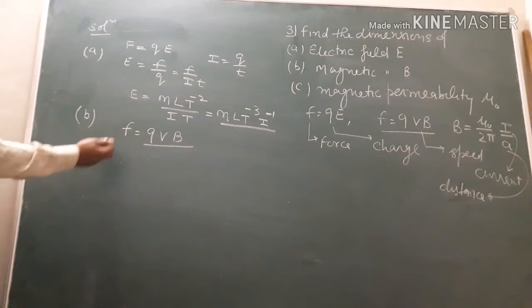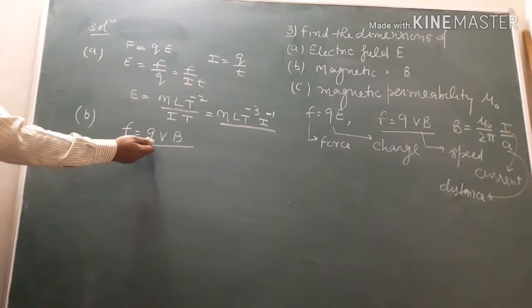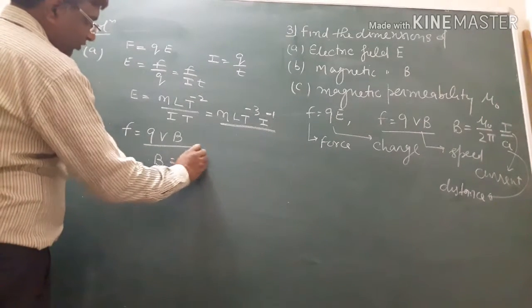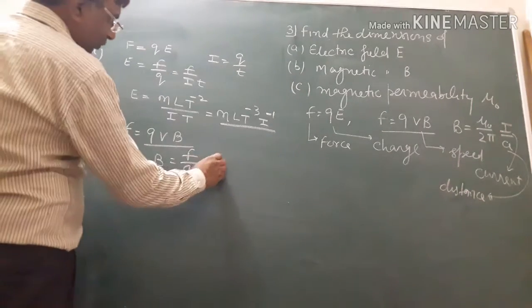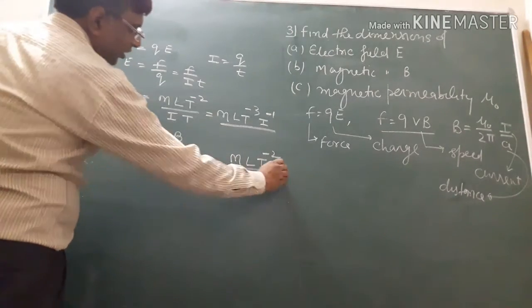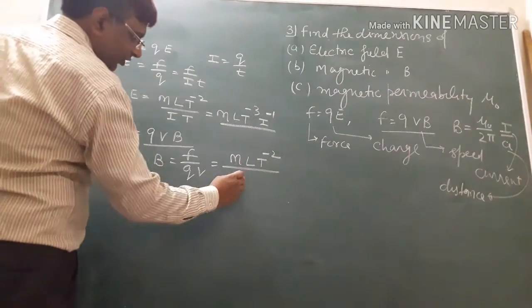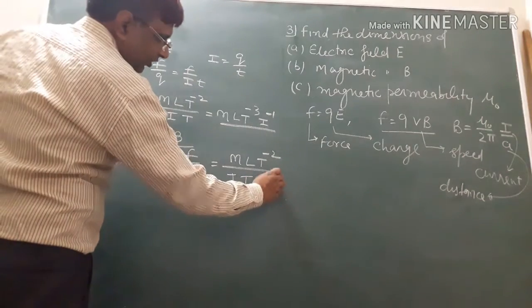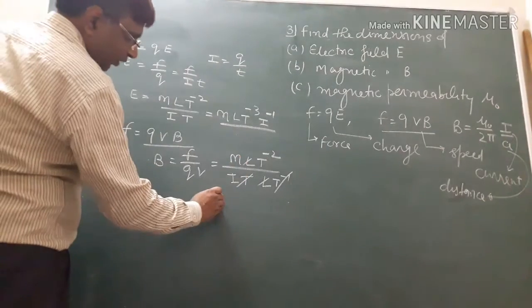Magnetic force is q v B. B equals F upon q v. Force is mass into acceleration, M L T minus 2. Charge is I into T. Velocity is length upon time, L T minus 1. This T will cancel.